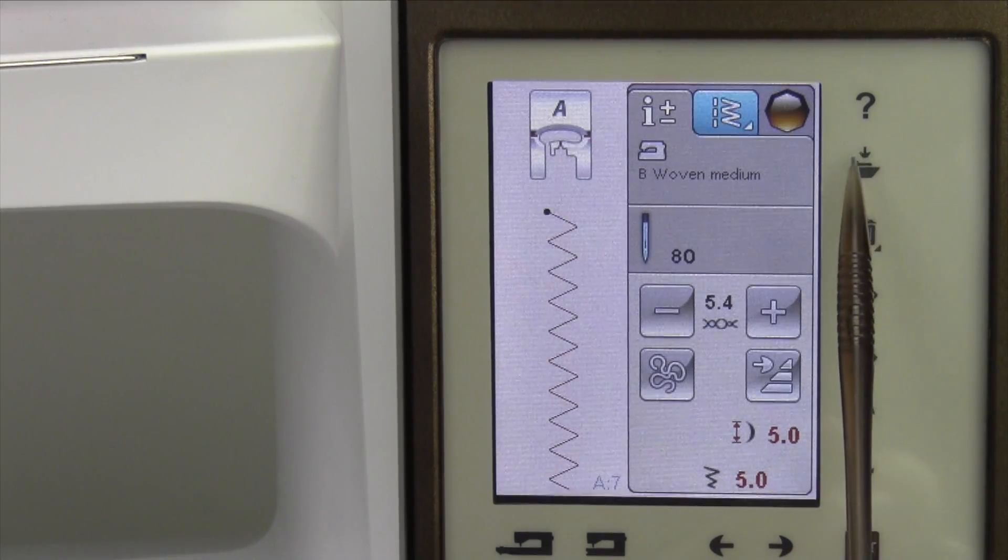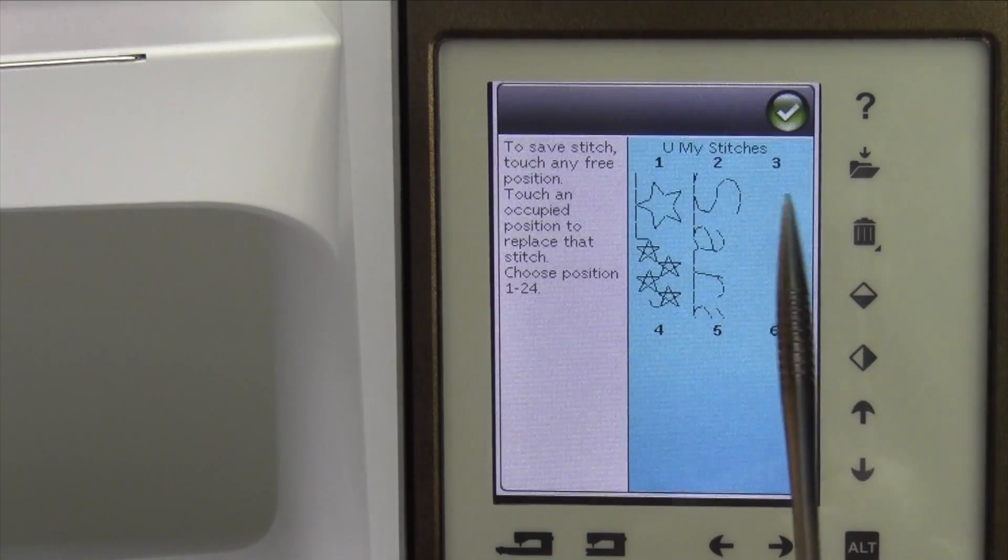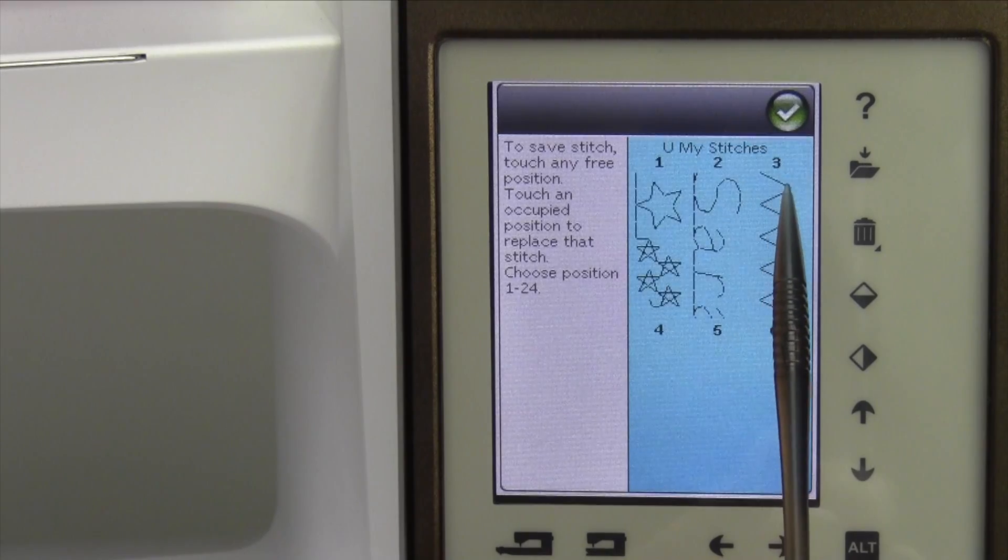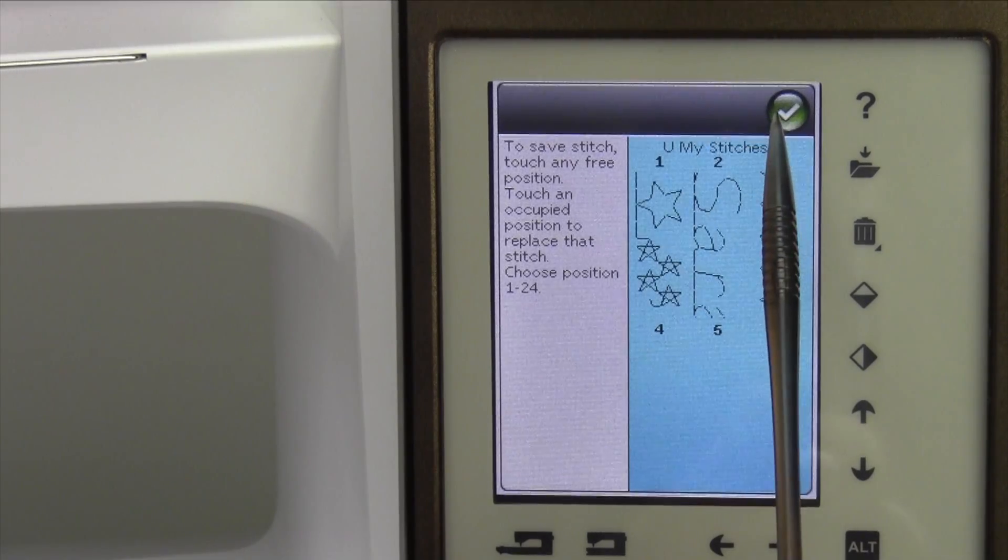Why not save it into your favorites? Go ahead and touch the folder with the arrow pointing into it, and we'll save it into the next available memory opening, so number 3, and do the green check mark.